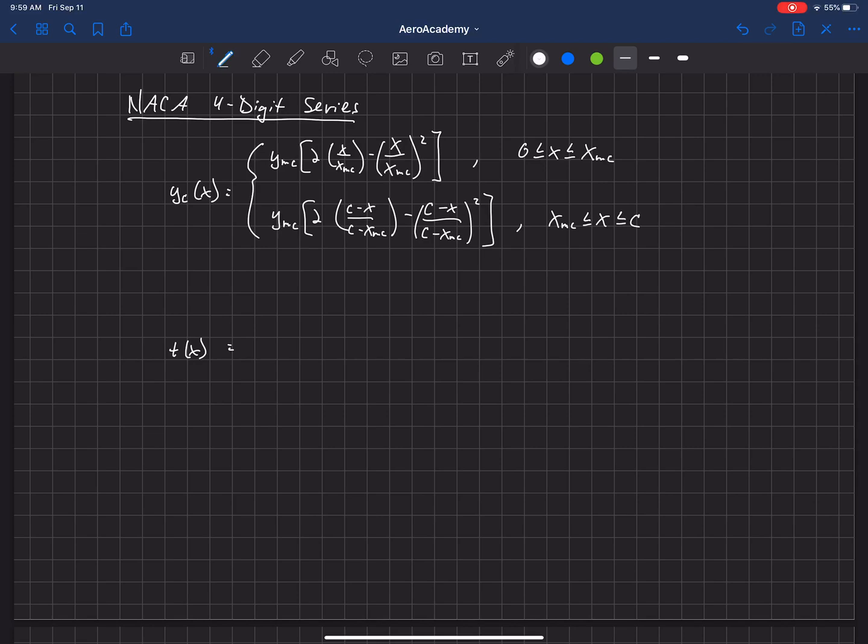And then the thickness distribution I'll just write out here is t sub m times [2.969 square root of (x over c) minus 1.260 (x over c) minus 3.516 (x over c) squared plus 2.843 (x over c) cubed minus 1.015 (x over c) to the 4th].